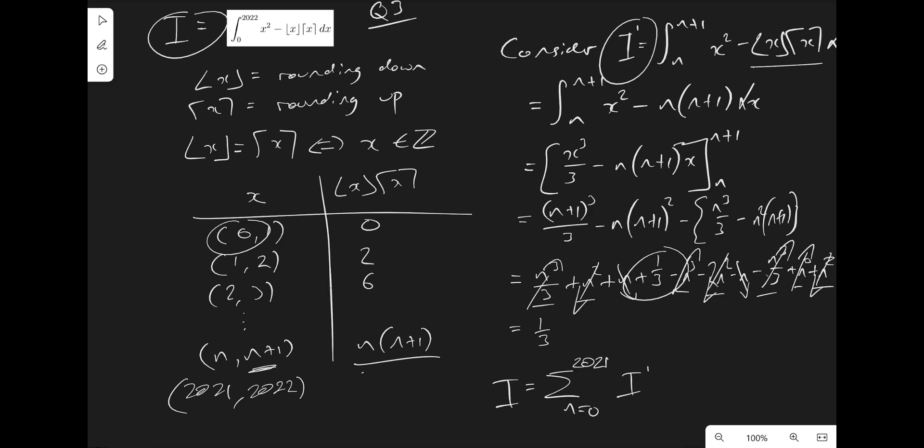So when we stick that all in here, this evaluates to be the sum from 0 to 2021, of 1 third, which, when we're just doing the sum of the constant, we can just multiply it by how many times we need to add it together. It's not 2021, because we have to include the 0 as well, so it's 2022 divided by 3, and that evaluates out to be 674, if you stick that in your calculator. So beautiful. That should be the answer, and I'm pretty sure if you check the answer online, that would be the right one. Thank you.